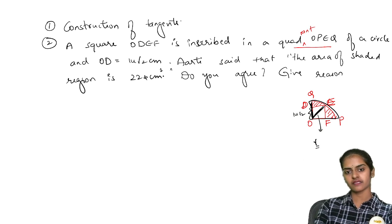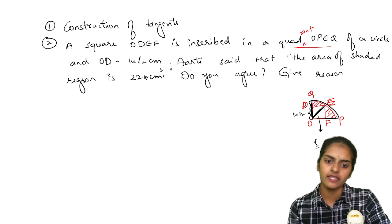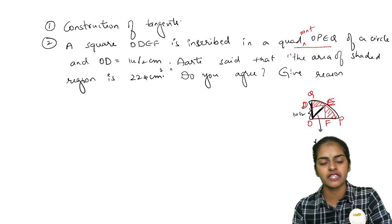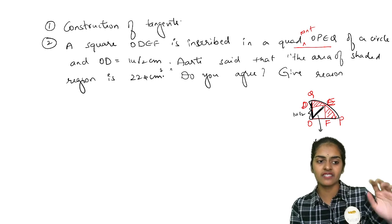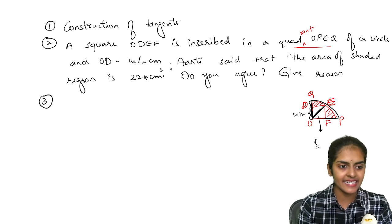So from there, yes, radius of the quadrant actually. So from there, you can take area of quadrant minus area of square, which will give you the area of the shaded region. So this is how you have to do area of shaded region questions. Then next,